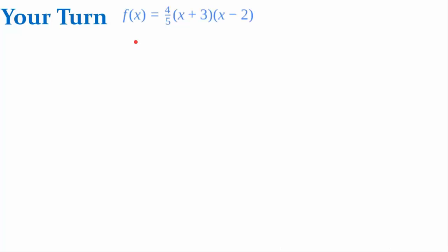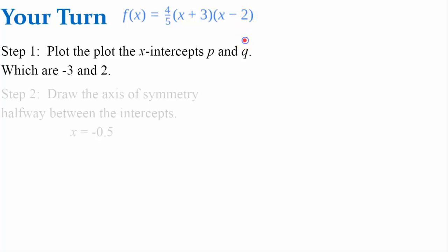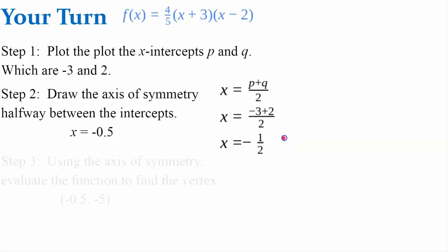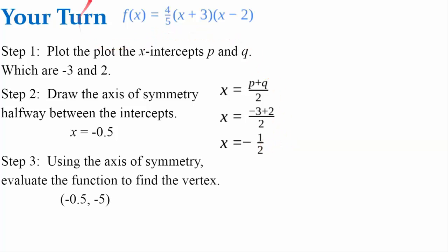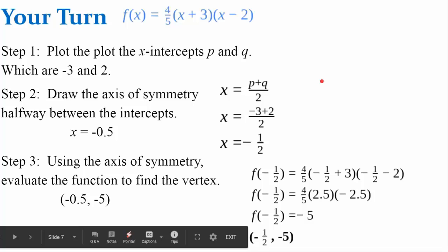Your turn. Please pause this video, graph this function, then come back and hit play when you're ready to check your work. Step 1: you should have identified and plotted the x-intercepts p and q — we have negative 3 and positive 2. Step 2: draw the axis of symmetry halfway between. Negative 3 plus 2 divided by 2 is negative one-half. Step 3: input negative one-half and evaluate for an output of negative 5, giving a vertex of (negative one-half, negative 5).